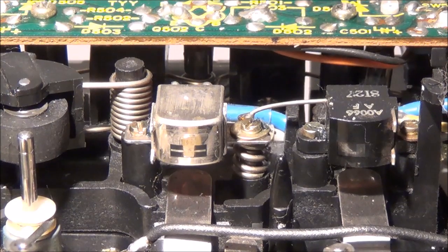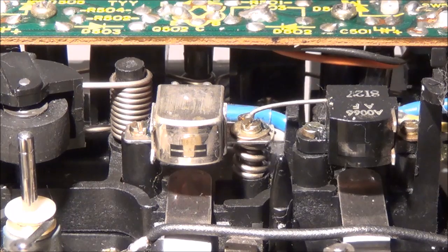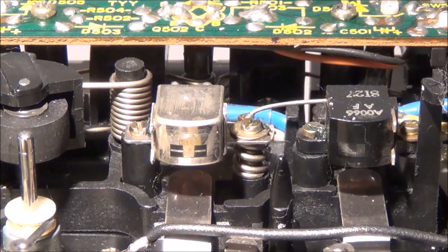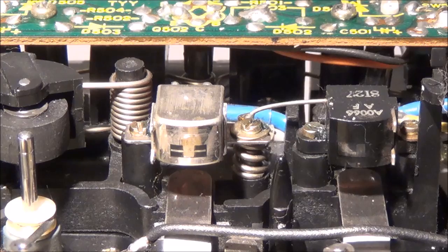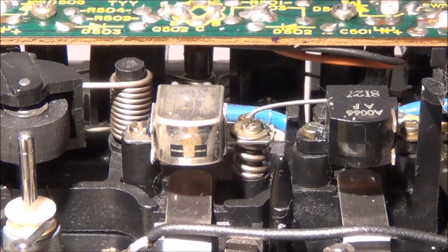Today I'm going to adjust the azimuth of this Sharp GF9191 stereo cassette recorder that I'm in the process of restoring.